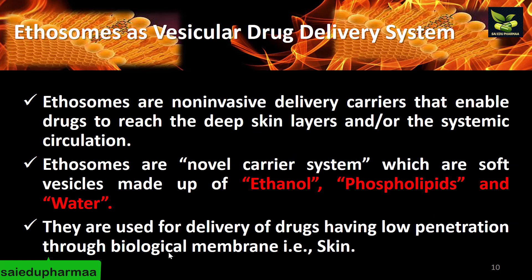Next are ethosomes. Ethosomes are non-invasive delivery carriers that enable drugs to reach deeper skin layers or the systemic circulation. They are basically formed of ethanol, phospholipid, and water. The name 'ethosome' comes from ethanol, and they are used for delivery of drugs which have low penetration through biological membranes such as skin. These are also widely used vesicular delivery systems.